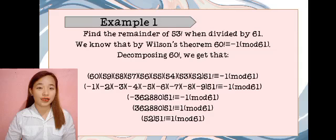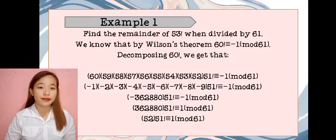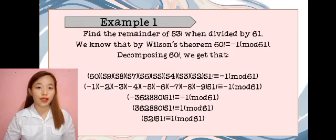Decomposing 60 factorial, we get that 60 times 59 times 58 times 57 times 56 times 55 times 54 times 53 times 52 times 51 factorial is identical to negative 1 mod 61. This equals negative 1 times negative 2 times negative 3 times negative 4 times negative 5 times negative 6 times negative 7 times negative 8 times negative 9 times 51 factorial is identical to negative 1 mod 61. Negative 362880 times 51 factorial is identical to negative 1 mod 61.